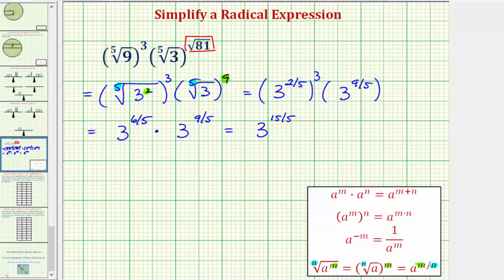Fifteen-fifths simplifies to three, and therefore this simplifies to three to the third, which equals three times three times three, which equals twenty-seven. So the given expression simplifies nicely to twenty-seven. I hope you found this helpful.